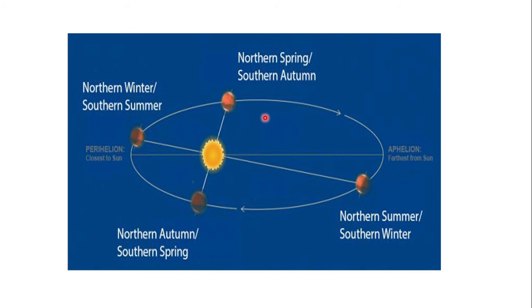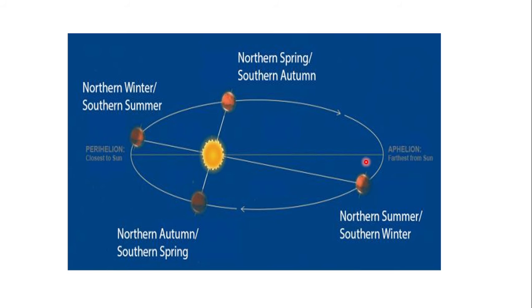Now, we know that the earth does not take a circular path around the sun — it takes an elliptical path, which means the sun is not always at the centre and is not equidistant from the earth at all times. At times the earth will be very close to the sun, and at other times it will be far away from the sun.